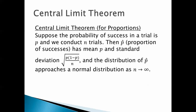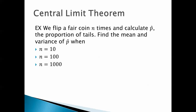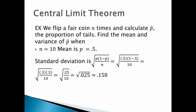Let's apply this. We flip a fair coin n times and calculate p-hat, the proportion of tails. Find the mean and standard deviation of p-hat when n equals 10, n equals 100, and n equals 1,000. For n equals 10, the mean of p-hat is just p, which is 0.5. The standard deviation is the square root of p times one minus p over n — that's the square root of 0.5 times 0.5 over 10, which is the square root of 0.025, which is about 0.158.